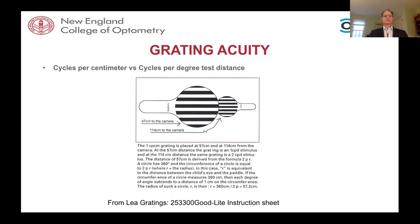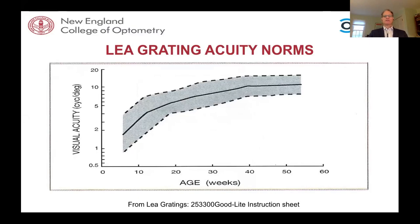The cards are labeled in cycles per centimeter — the physical measurement regardless of where you hold them. Cycles per degree depends on the angular subtense at the testing distance, which can be translated to an actual acuity measure. Acuity develops rapidly over the first year and a half to two years of life, then starts to plateau. Leia's norms for acuity and Teller card acuities each have their own norms, both with both eyes open and monocularly.